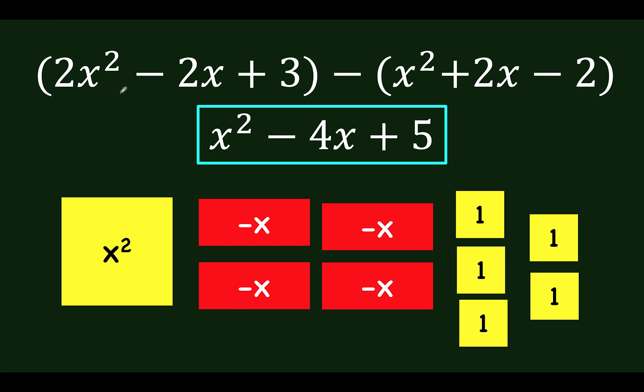The quantity 2x squared minus 2x plus 3 minus the quantity x squared plus 2x minus 2. And you keep repeating this process until the visual and the abstract became automatic to you.